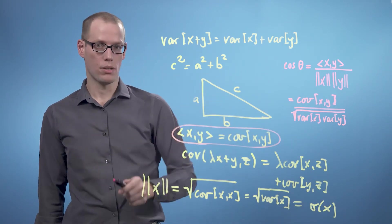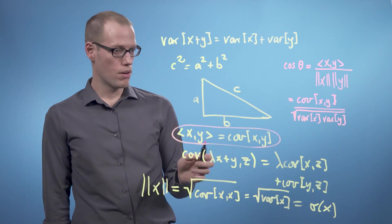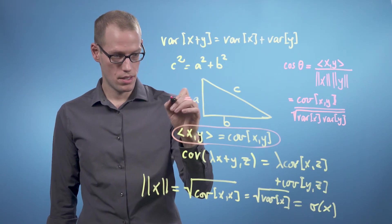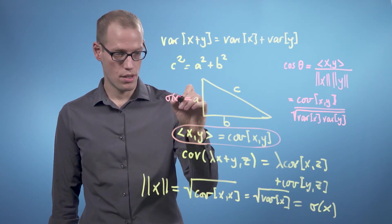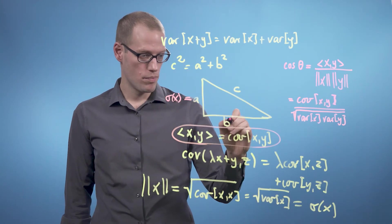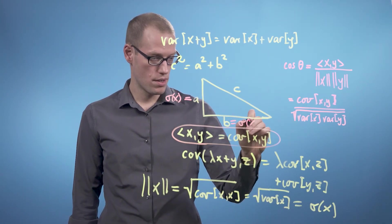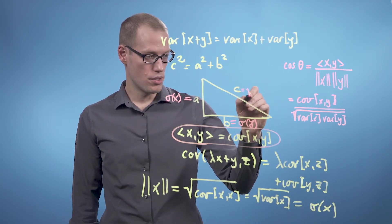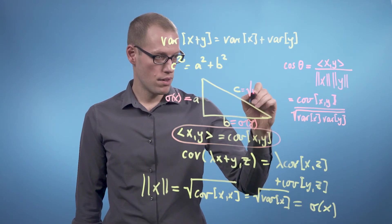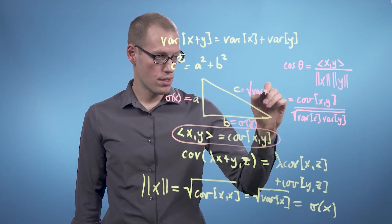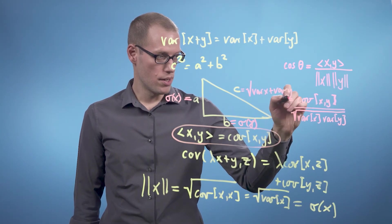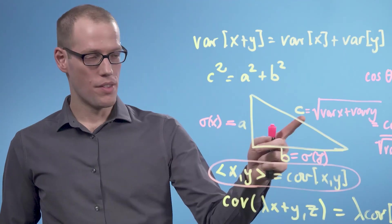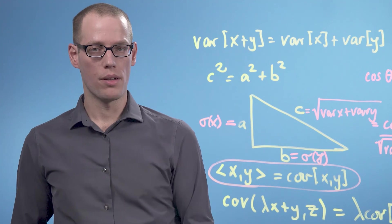Coming back now to our geometric interpretation, we would replace a with the standard deviation of x, b is the standard deviation of y, and c is the square root of the variance of x plus the variance of y. And this is how we get our geometric interpretation of random variables.